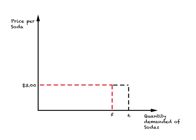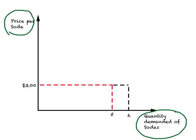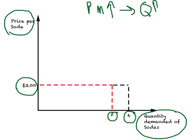Now let us look at this from the perspective of sodas. With price of sodas on the vertical axis and quantity demanded of sodas on the horizontal axis — price of sodas stayed the same at $3 throughout. When the price of movies was $3 this person bought 5 sodas, and when the price of movies increased, this person started buying more sodas — an increase in quantity demanded of sodas.